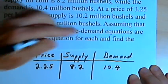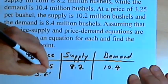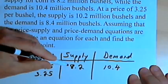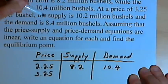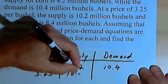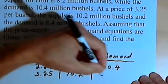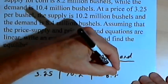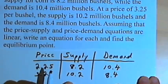When the price goes up to $3.25 per bushel, the supply also increases — the supply goes up to 10.2 million bushels — but the demand decreases to 8.4 million bushels. So that's all the information we were given.